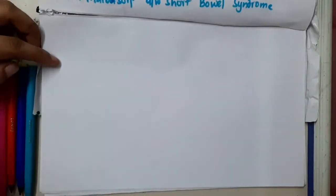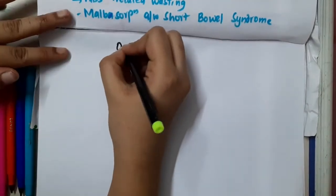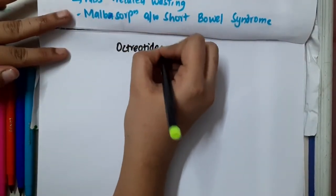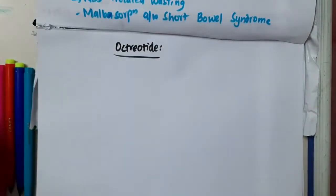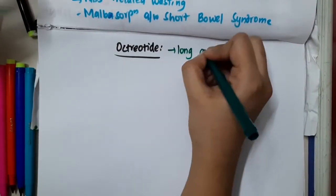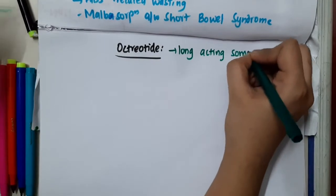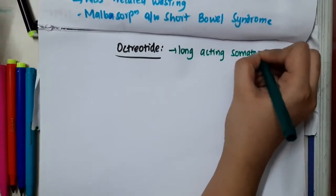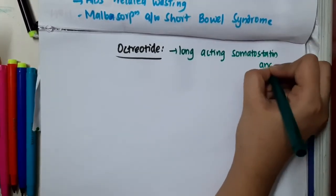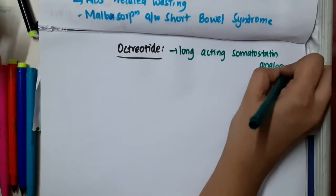Hello friends, let us now learn some important points about octreotide. What is octreotide? Octreotide is a long-acting somatostatin analog.